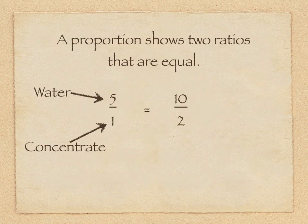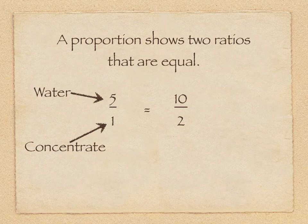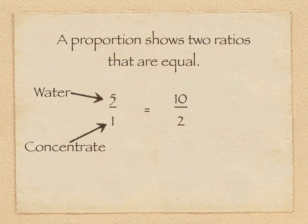A proportion shows two ratios that are equal. For instance, if you need to make some juice and the recipe called for five parts water for every one part concentrate, if you wanted to double up the amount of juice that you made, you'd simply add ten parts water and two parts concentrate. So what we have is a true proportion that those values really are equal.